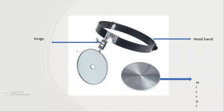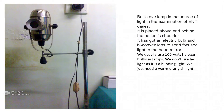With the head mirror, you have to manually adjust everything, which can be troublesome. The bull's eye lamp is the light source for examination. Light from it is converged by the concave mirror. The lamp is placed above and behind the patient's shoulder. It has an electric bulb and a bi-convex lens. We use 100-watt halogen bulbs — not LED — because LED is very blinding and too sharp to properly focus.